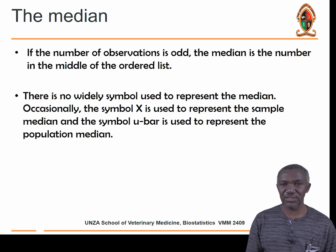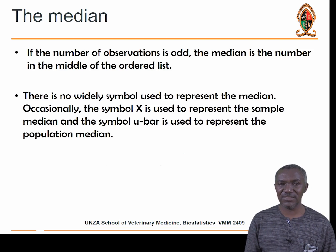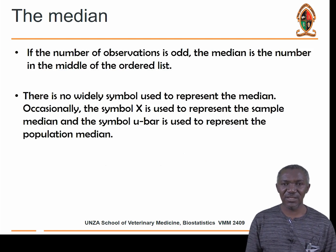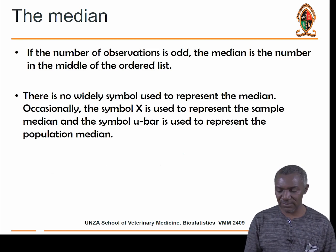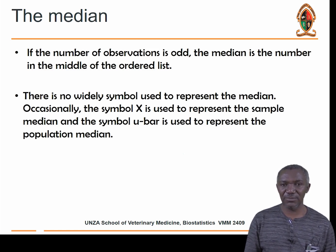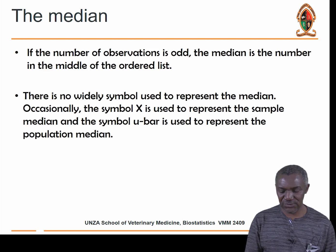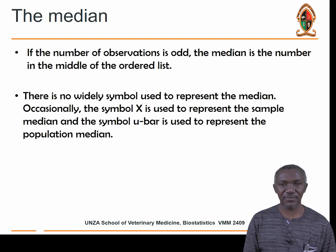If the number of observations is odd, the median is the number in the middle of the ordered list. Normally there is no widely used symbol for the median as there is for the mean. Occasionally the value x̃ is used to represent the median.